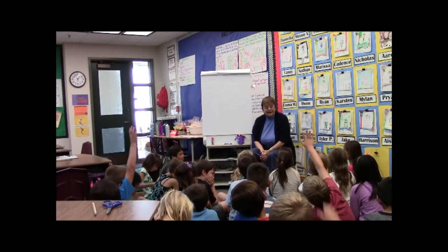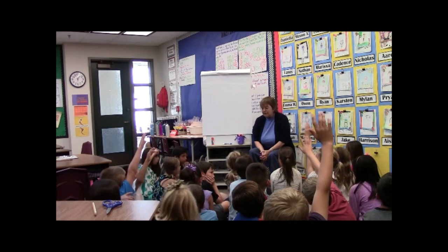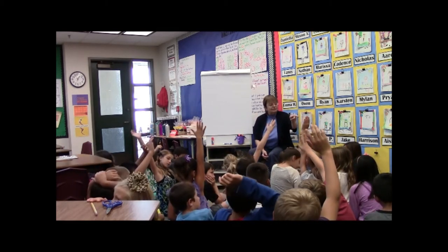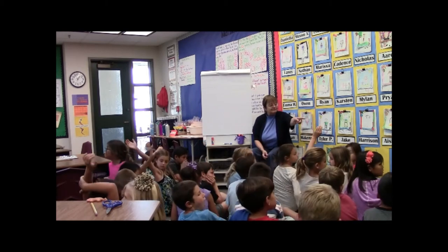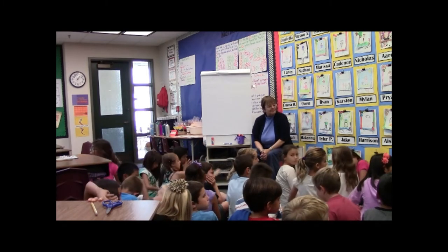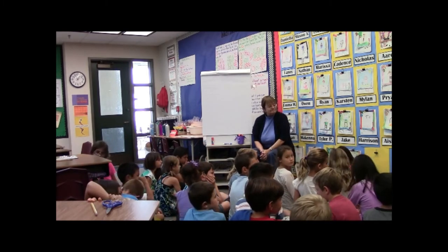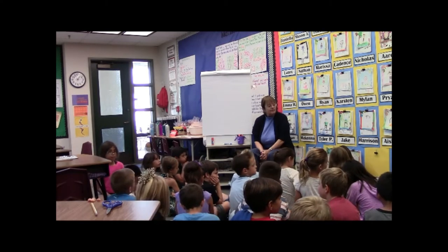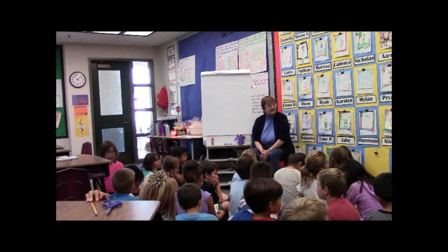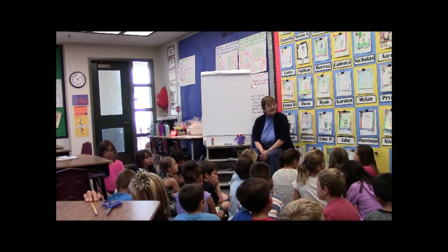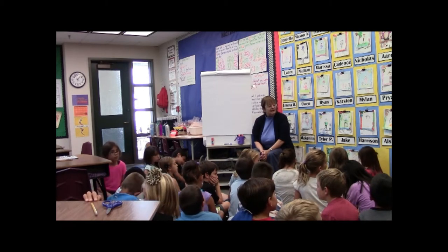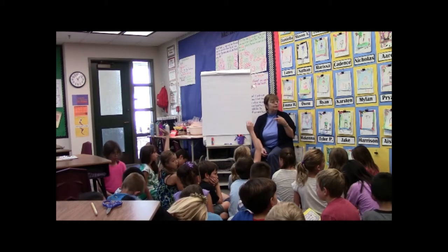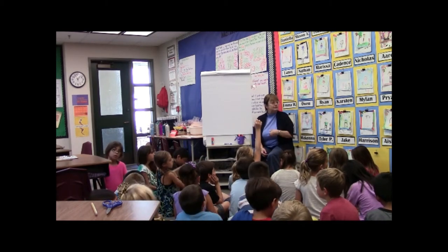How did you know so fast? The hands were going up like crazy. How did you know so fast? I knew so fast because I did 30 plus 30 which equals 60, and then I just added up six rows and knew it was 60. So you thought three rows plus three rows would give you six rows, and that's 30 plus 30? Nice.